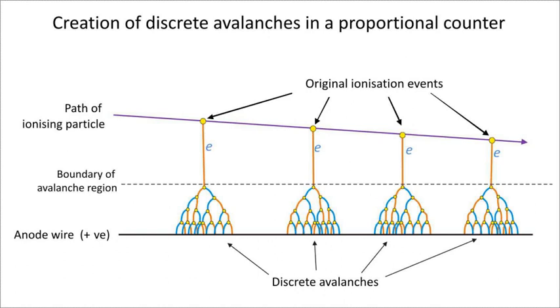An ionizing particle entering the gas collides with an atom of the inert gas and ionizes it to produce an electron and a positively charged ion, commonly known as an ion pair. As the ionizing particle travels through the chamber it leaves a trail of ion pairs along its trajectory, the number of which is proportional to the energy of the particle if it is fully stopped within the gas.